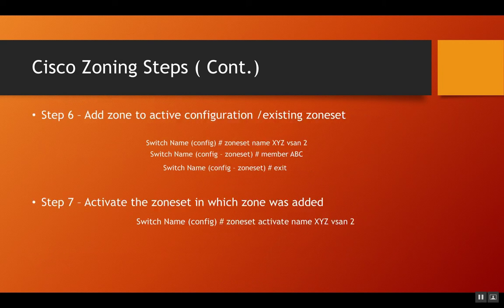Once you are done adding members to the zone, you need to add that zone to a zone set. The zone set is usually the active configuration containing other zones already working in that vSAN. Use 'zoneset name XYZ vSAN 2', which puts you in the config-zoneset mode. You can then add members — for example, 'member ABC', 'member ABC1', 'member ABC2' — so if you've created multiple host-to-array zones, you can add all of them here, and then exit that mode.